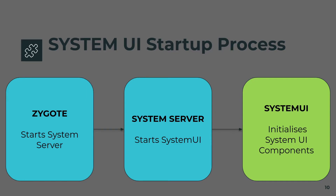The System Server is one of the most important processes that Zygote starts. The System Server is responsible for a lot of things — it starts all the services within Android and is also responsible for starting the System UI. So on a high level: the kernel starts Zygote, Zygote starts System Server, System Server starts all services including the System UI app, and finally System UI initializes all components like the navigation bar, status bar, and other components.